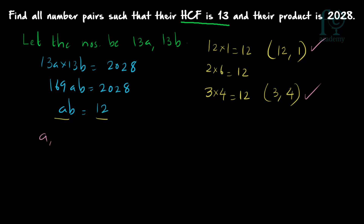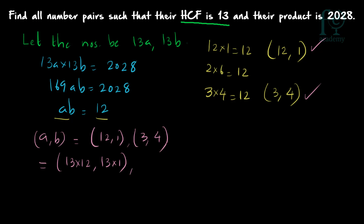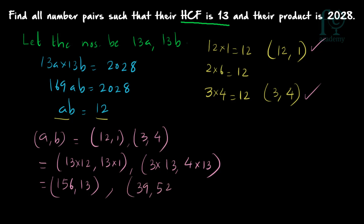The possible values of (A, B) are either (12, 1) or (3, 4). So the corresponding number pairs are 13×12 and 13×1, giving the first pair (156, 13) whose HCF is 13 and product is 2028. The second pair is 13×3 and 13×4, giving (39, 52), which also has HCF 13 and product 2028. The key is finding co-prime number pairs whose product equals 12.